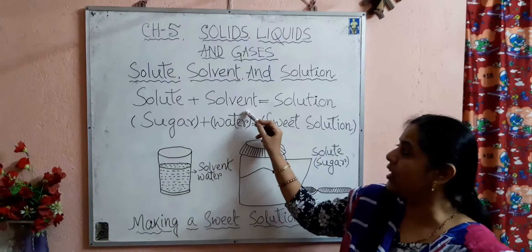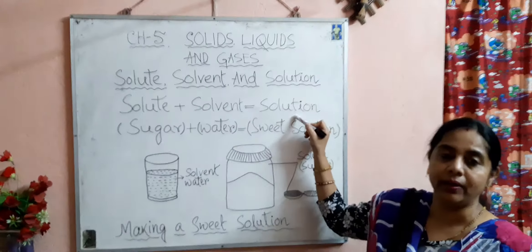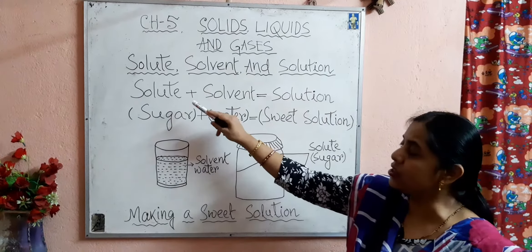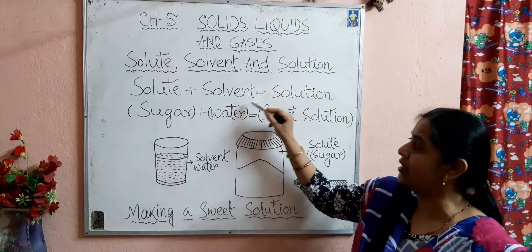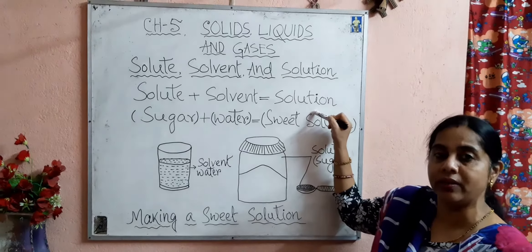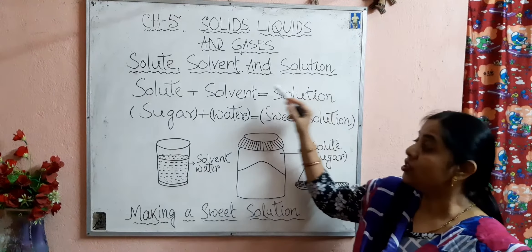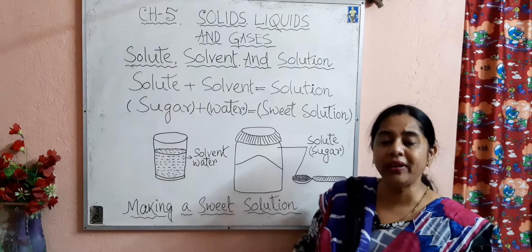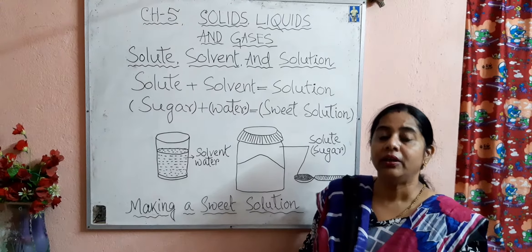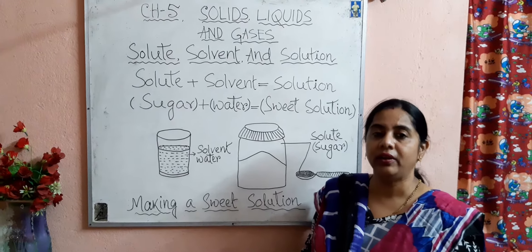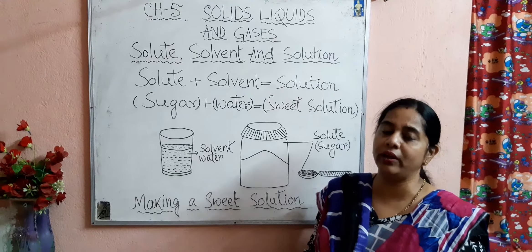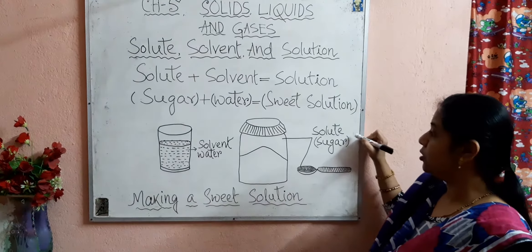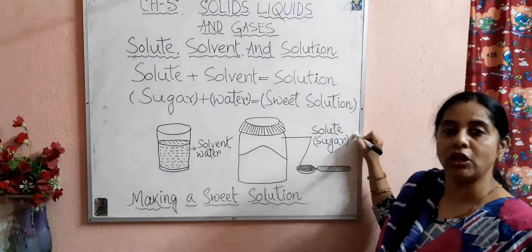Solute plus solvent is equal to solution. Now let us see what is a solute, what is a solvent, and what is a solution. The solid which dissolves in a liquid is known as a solute. In this activity, sugar is the solute.